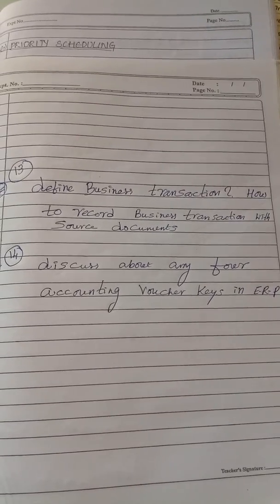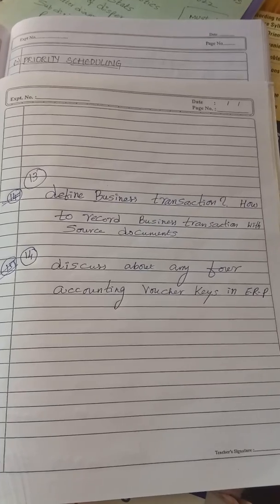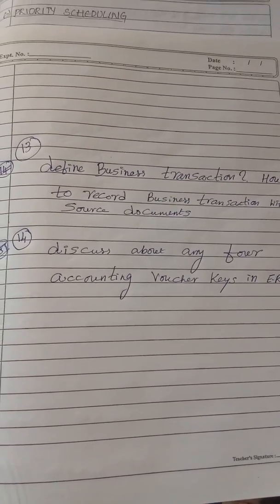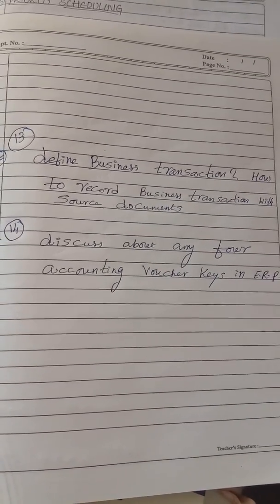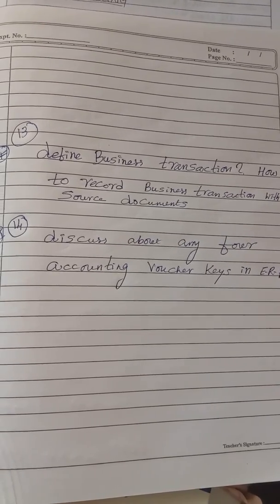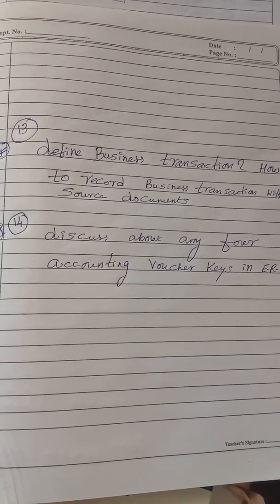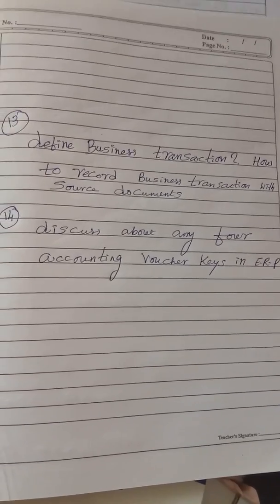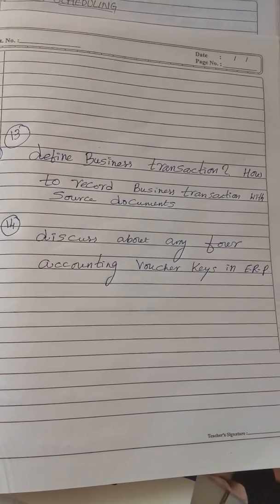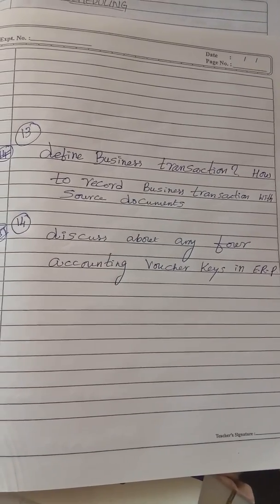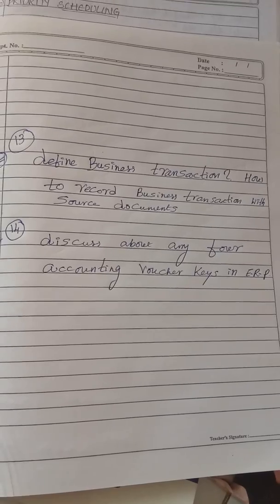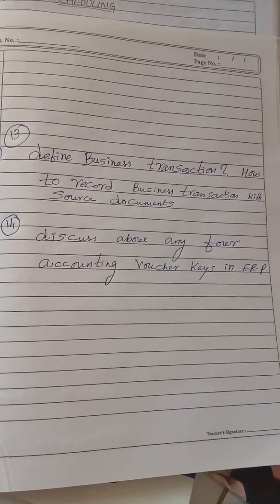Questions 13 and 14: define business transaction, how to record business transactions with source documents. What is a business transaction? Discuss any four accounting voucher keys.